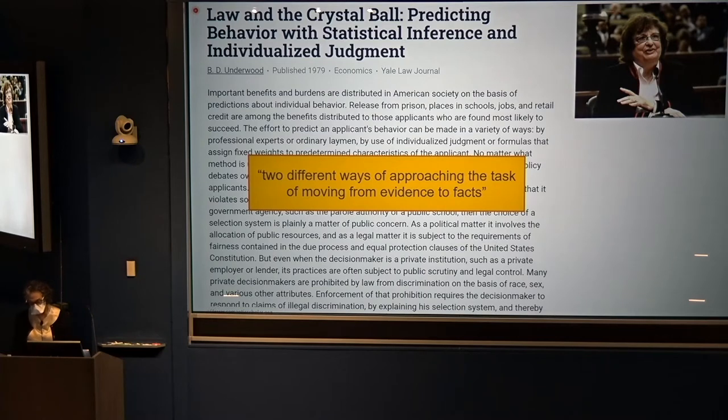Algorithmic predictors are increasingly being used to score individuals, and as Underwood noted, even as early as 1979, important benefits and burdens are distributed in society according to these predictions, including release from prison, placement in schools and jobs, and the granting of retail credit.